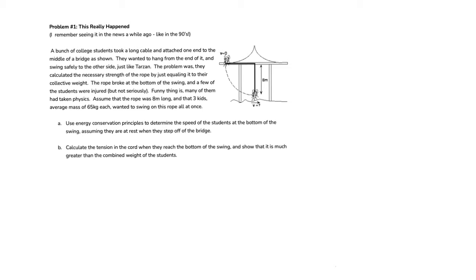Assume that the rope was eight meters long and that three students' average mass of 65 kilograms each wanted to swing on this rope all at the same time. A wise idea, indeed. First, use energy conservation principles to determine the speed of the students at the bottom of the swing, assuming that they are at rest when they step off the bridge. Let's proceed.